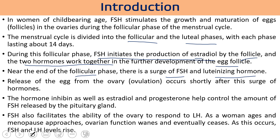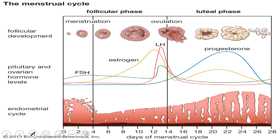Inhibin, estradiol, and progesterone help control the amount of FSH released by the pituitary. FSH also facilitates the ability of the ovary to respond to LH. As a woman ages and menopause approaches, ovarian follicles wane and eventually cease, at which point FSH and LH levels become very high.